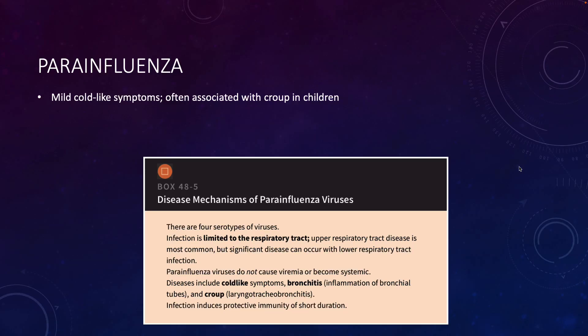Our next paramyxovirus is parainfluenza. Parainfluenza generally will cause mild cold-like symptoms and a disease manifestation that we call croup, which is basically inflammation in the larynx, the trachea, and the bronchii.